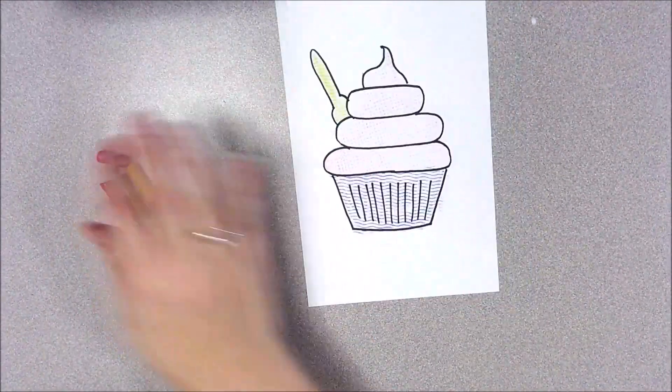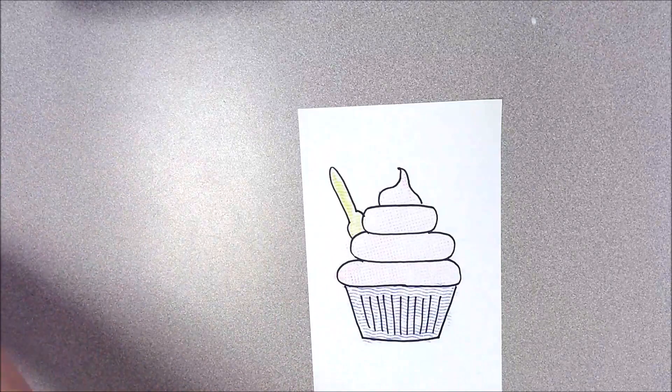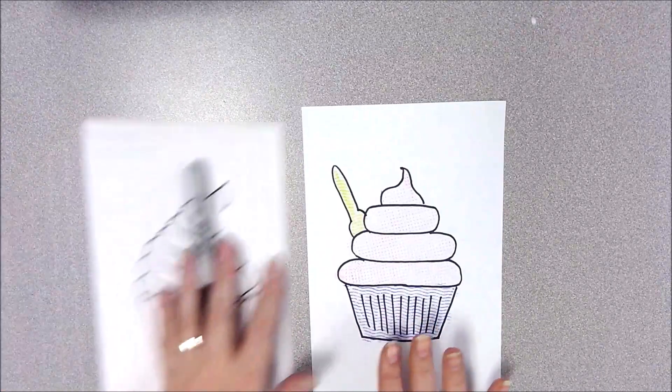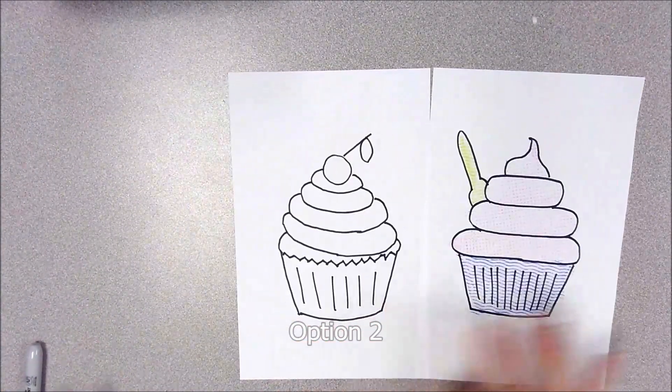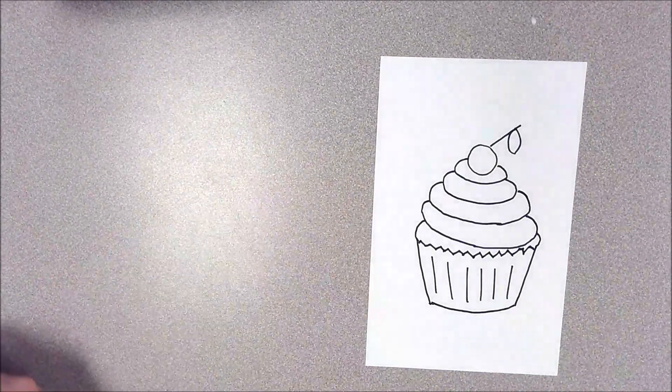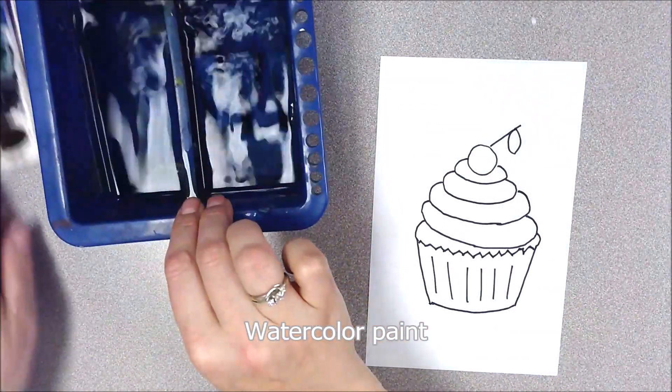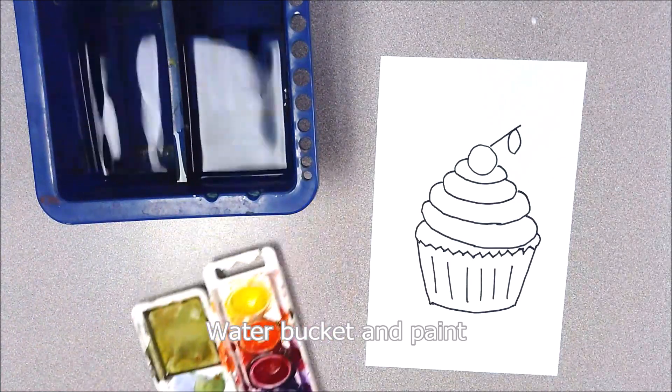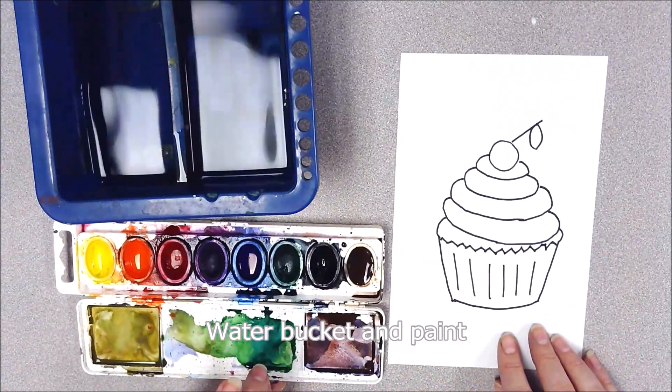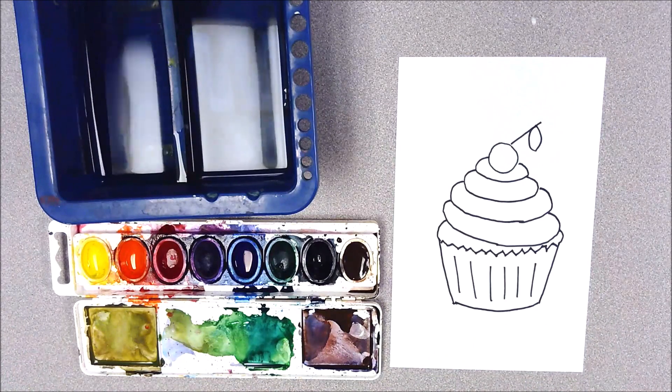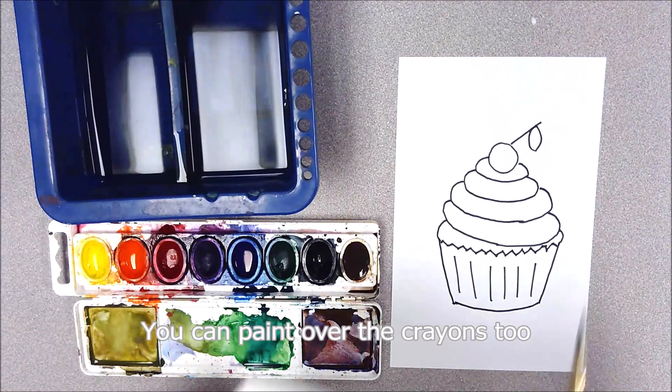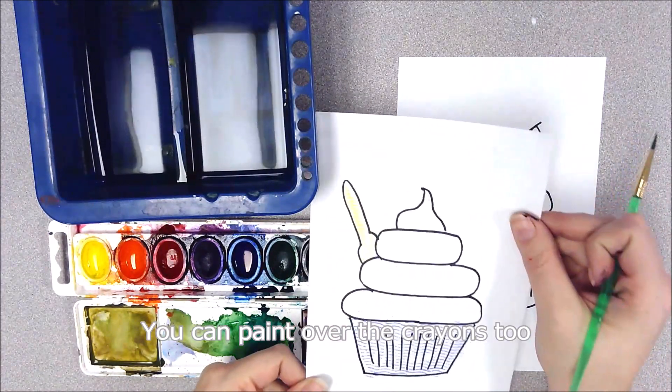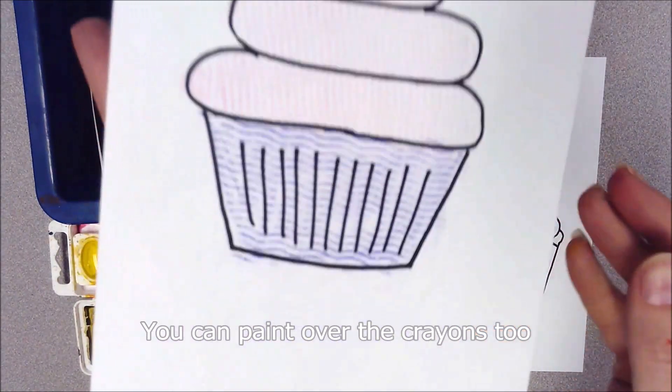If you want to, you can combine this with the next step. The other way we can add color is to watercolor paint. So I have my water bucket. I have my paint. And if you want to, you can also watercolor paint on top of the crayons.